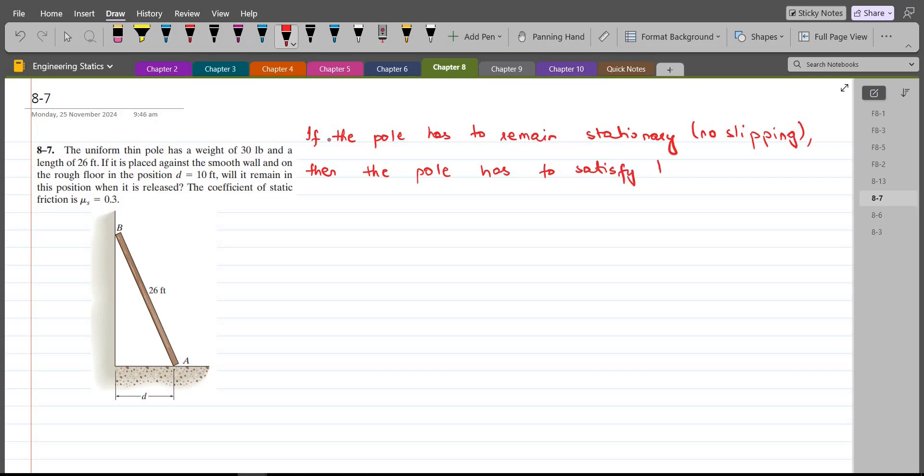The frictional force at point A on the rough floor should be less than or equal to the maximum frictional force at point A. We can also write this statement as Fa should be less than or equal to μs times Na.